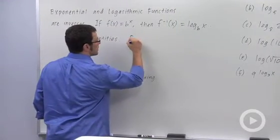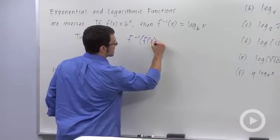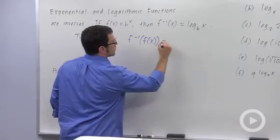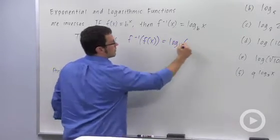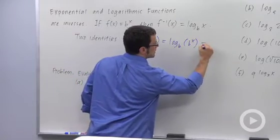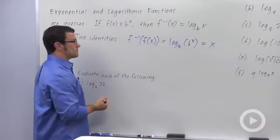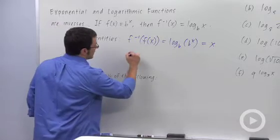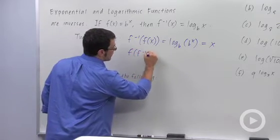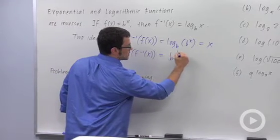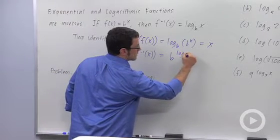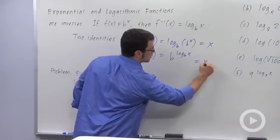And that gives rise to two identities. First, f inverse of f of x, which is log base b of b to the x, is x.